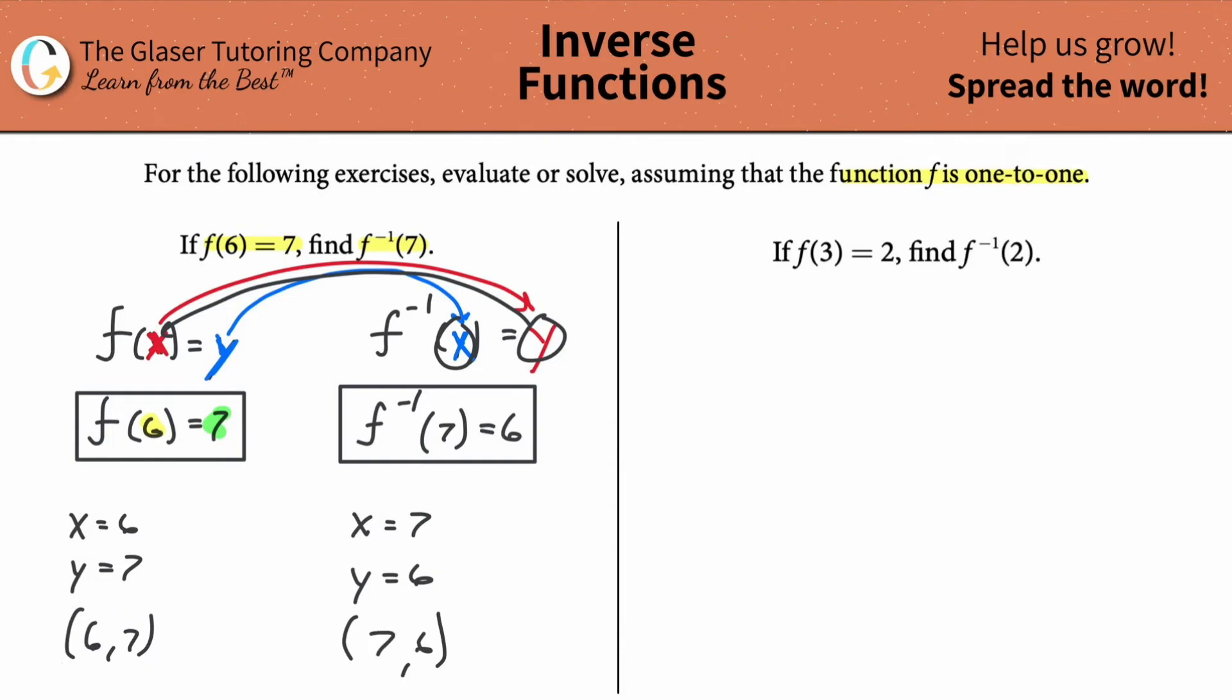If this is the coordinate of the original, guess what the new one is? Seven, six. Boom, you just switch them. That's it. If this was the blue y, it became now the blue x. If this was the red x, this became now the red y. You see, it's so much easier with the coordinates.